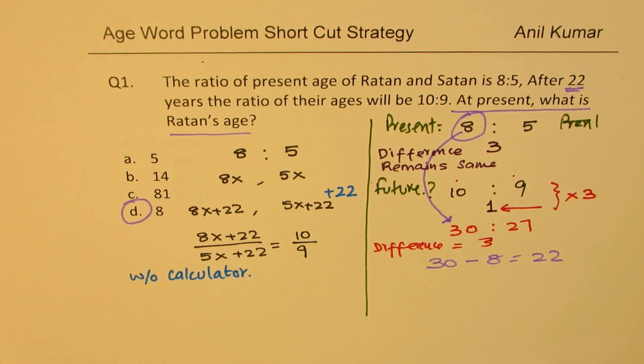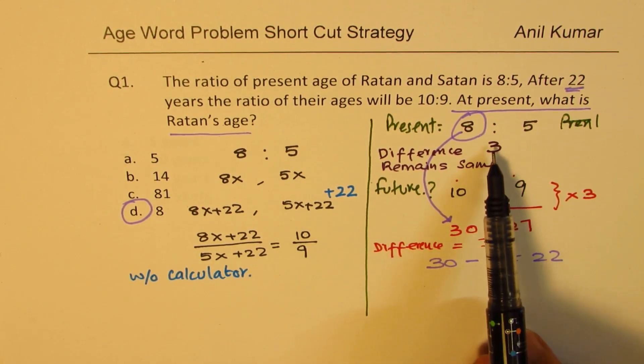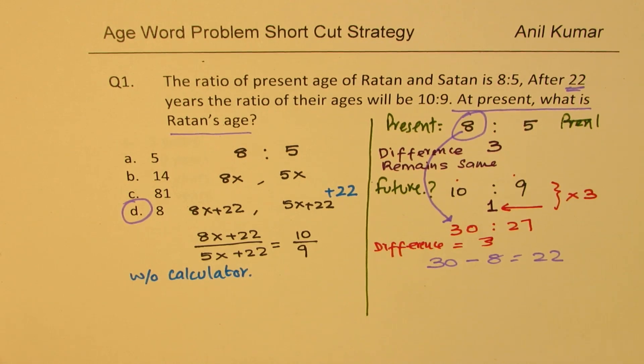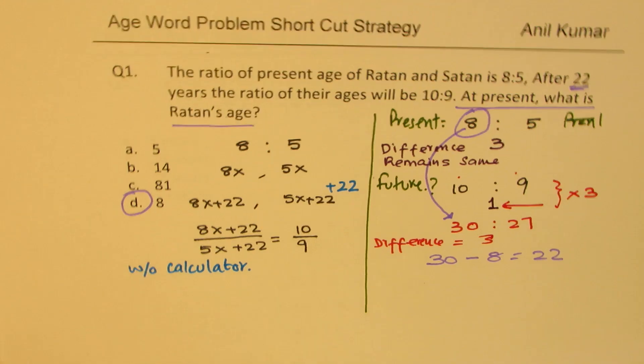See how we twisted the question and very intelligently processed the information. So we started with 8 is to 5, clearly knowing that one person is 3 years elder to the other. After years, this difference is going to remain same. When the ratio becomes 10 is to 9, it seems that it is 1. It cannot be. It has to be 3. To make it 3, I have to multiply this by 3. 30 is to 27. See, 30 is to 27 is same ratio as 10 is to 9, but we have now this 3 matching. And if we check, 30 minus 8, we get 22. So after 22 years, a person is going to be 30, the other will be 27. So the present age should be 8.